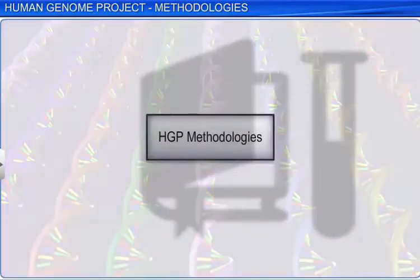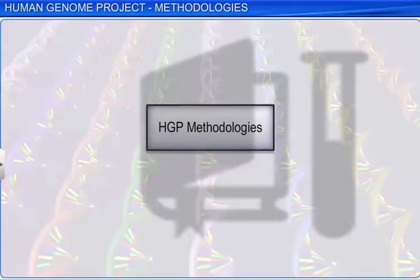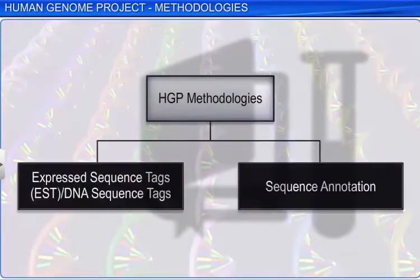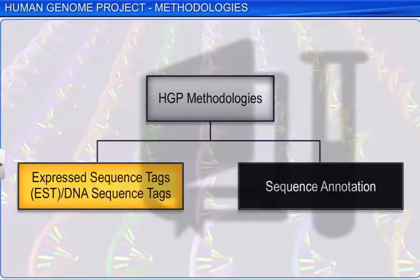The Human Genome Project itself was made possible by two major methodologies of biological research: expressed sequence tags or ESTs, DNA sequence tags, and sequence annotation.